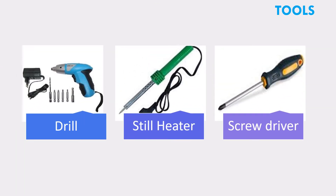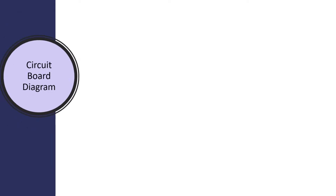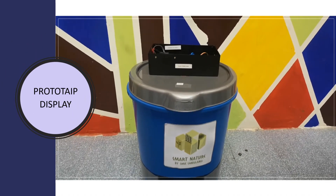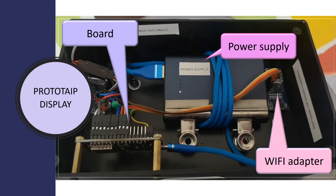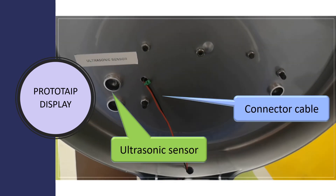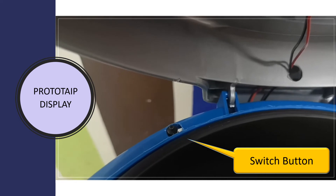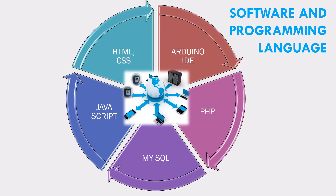We also use tools such as a drill, steel heater, and screwdriver to assist the process. This is the circuit board diagram that we designed. We use several software and programming languages in developing our prototype: Arduino IDE, PHP, MySQL, JavaScript, HTML, and CSS.